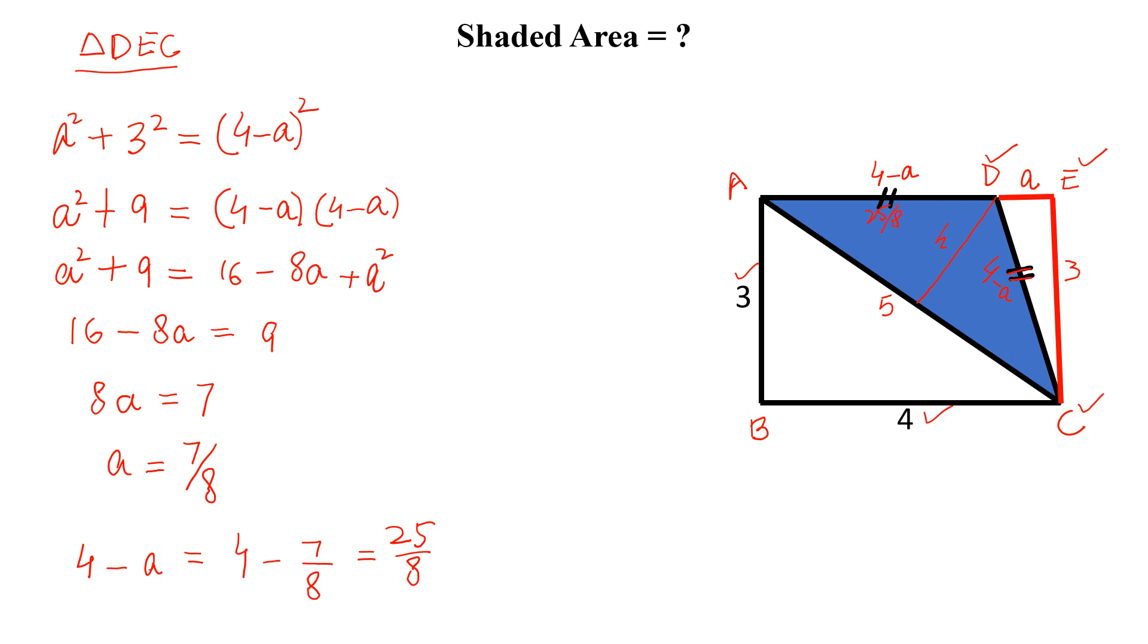Similarly, this length is 25 by 8. Now we can find the height. How can we find the height by Pythagoras theorem from this triangle?